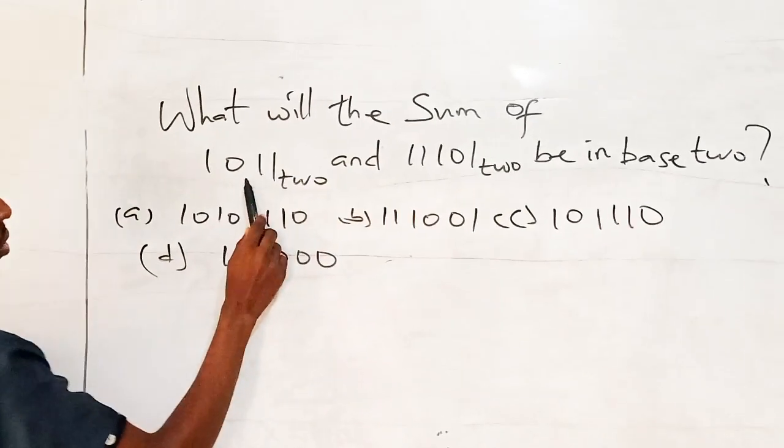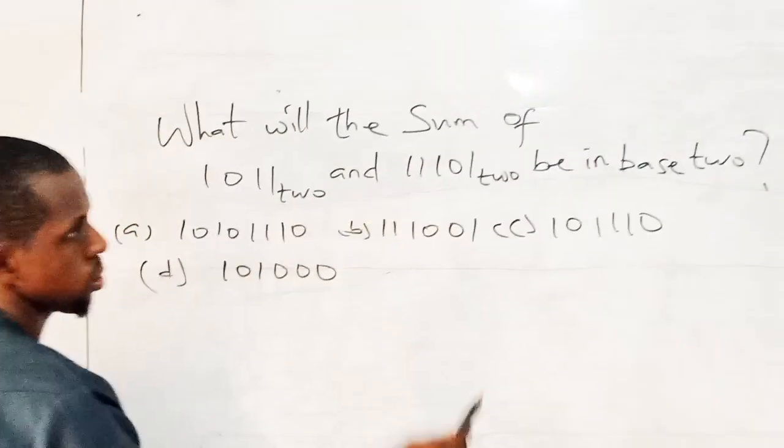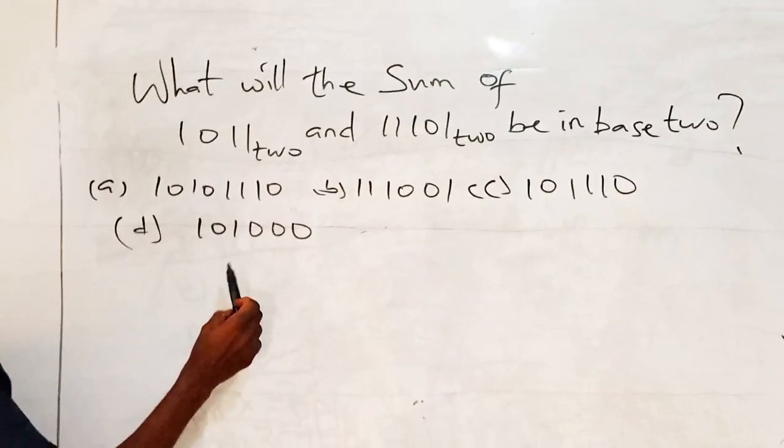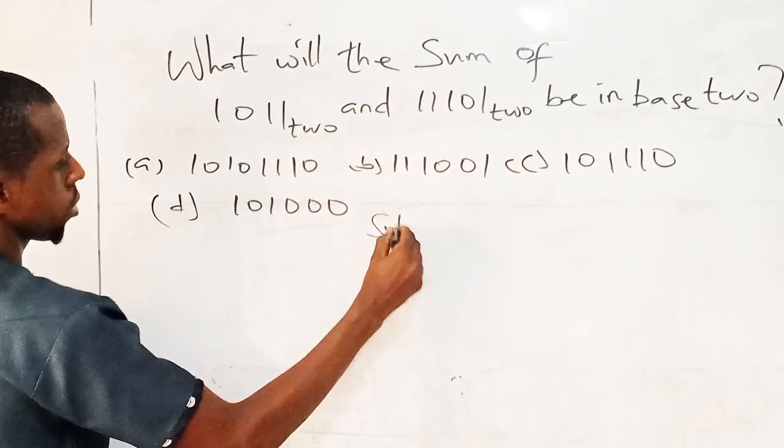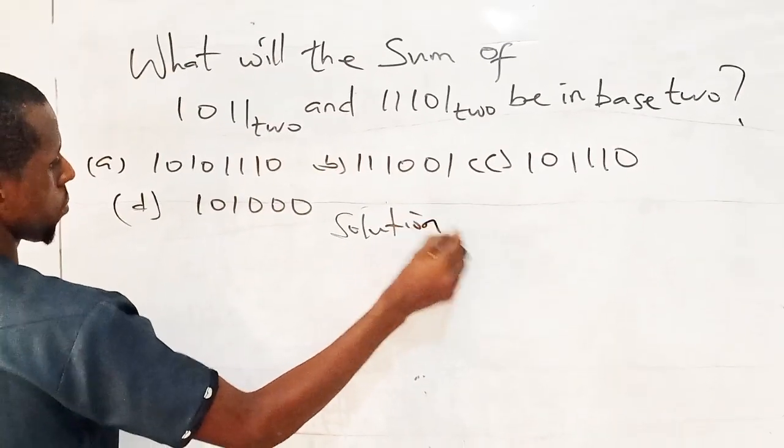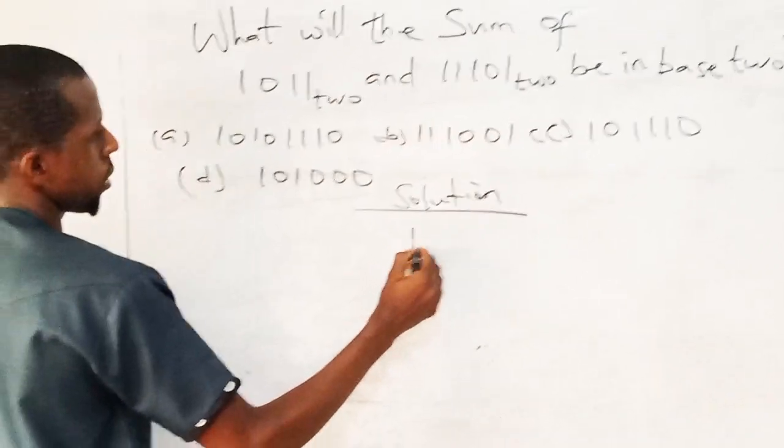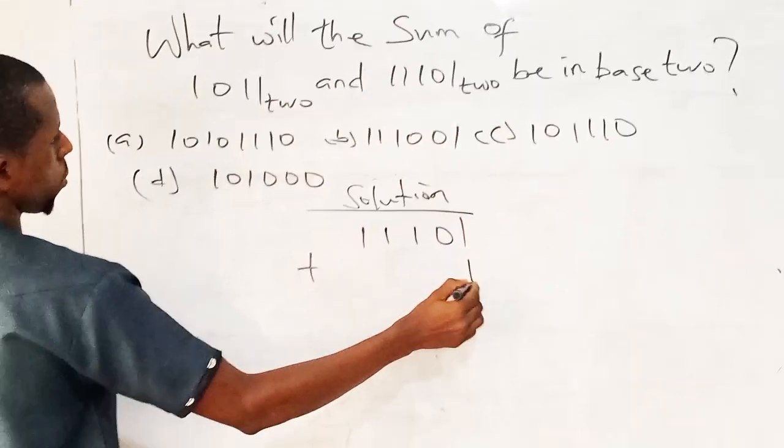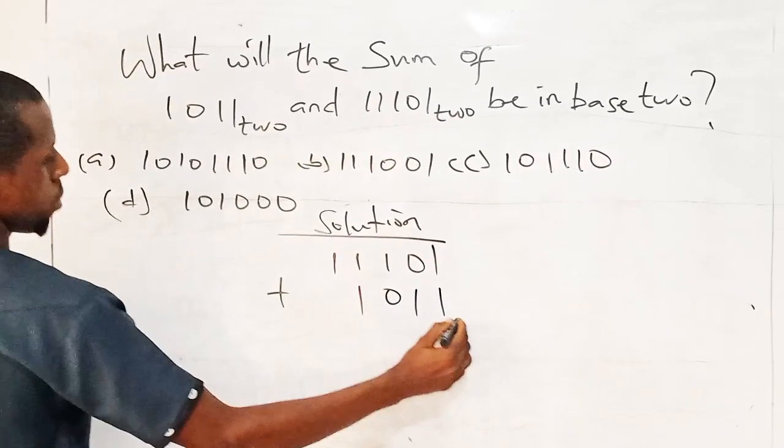We will find the sum of these two numbers in base two, that is binary number. So what is the sum we have to add? How do we solve this? Solution: we have 11101 base 2 plus 1101 base 2.